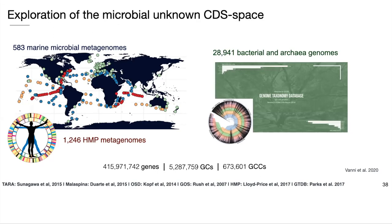We initially applied our approach to about 2,000 metagenomes and 29,000 prokaryotic genomes, which resulted in a curated set of more than 5 million good quality gene clusters with more than one member and 600,000 communities, which we used to perform an in-depth exploration of the unknown space under both an ecological and genomic perspective.